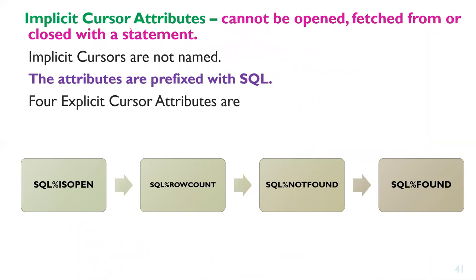Next are implicit cursor attributes. For implicit cursors, you cannot explicitly open, fetch from, or close them with a statement — implicit cursors are not named. For implicit cursors, the attributes are prefixed with SQL instead of a cursor name.